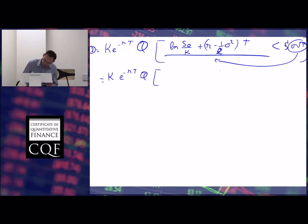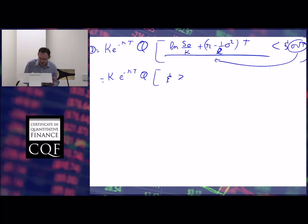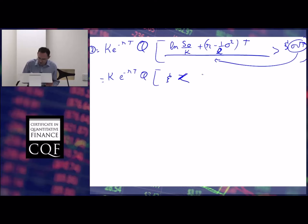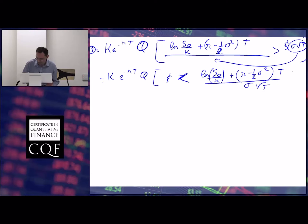So that's the probability that xi is less than — here it should be less than — log of S0 over K plus r minus one-half of sigma squared, times t, divided by sigma times square root of t. And that's exactly N of d2.